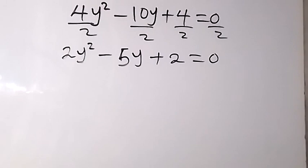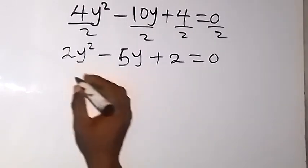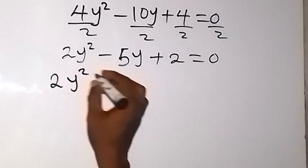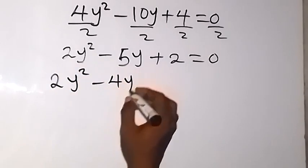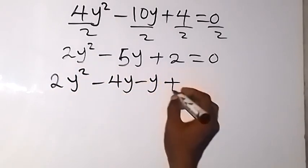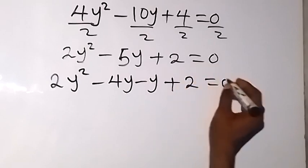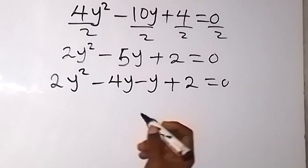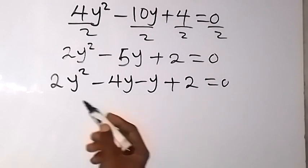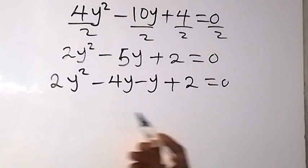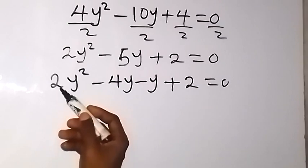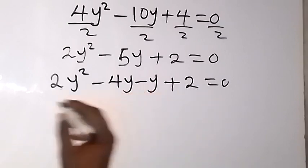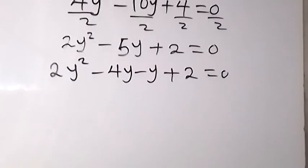We factorize the quadratic. We split the middle term as 2y squared minus 4y minus y plus 2 equals 0. Note that minus 4y minus y gives minus 5y, and the product of the first and last coefficients gives 4, confirming our split is correct.